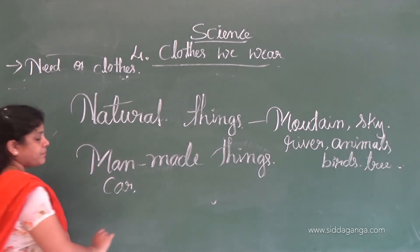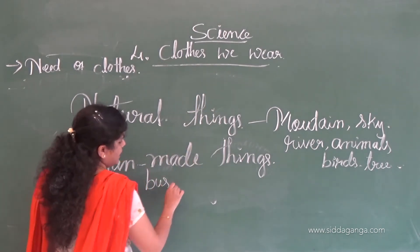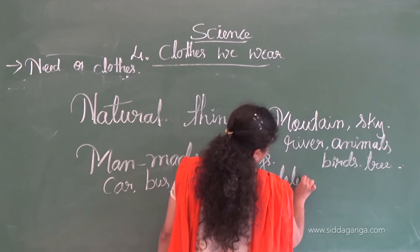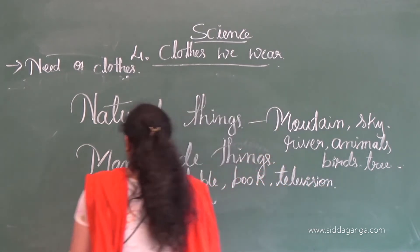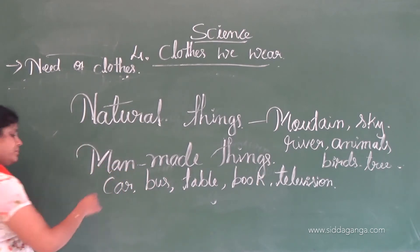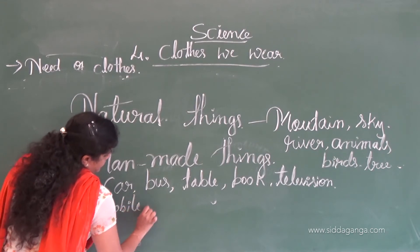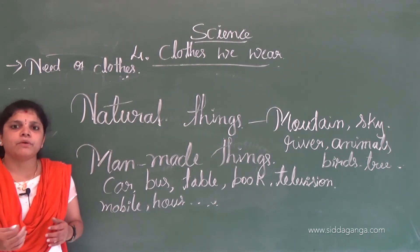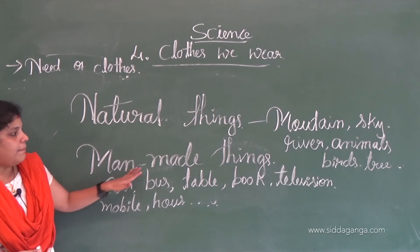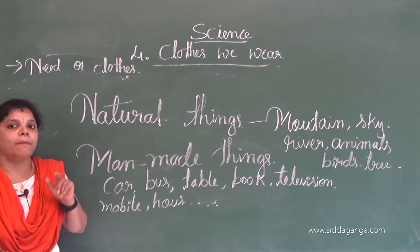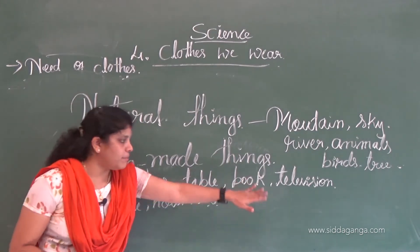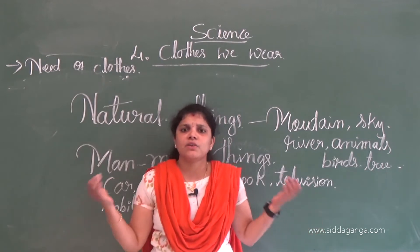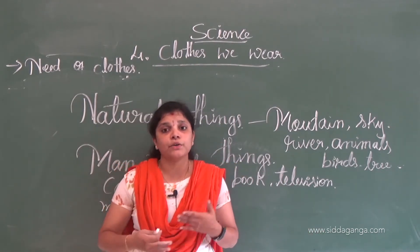Examples of man-made things are: car, bus, vehicles, table, book, television, mobile, house, building, chalk, board, and camera. Man prepares these things for their use. Things which are made by man are called man-made things. Again we can classify things into living and non-living things.